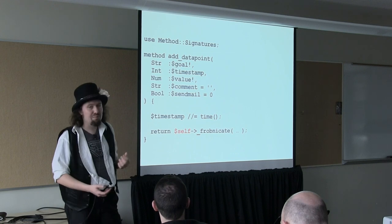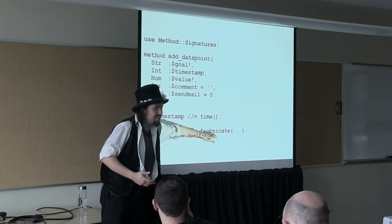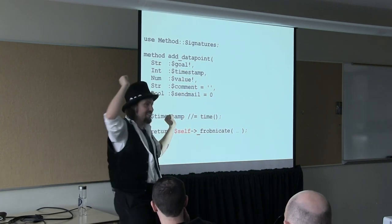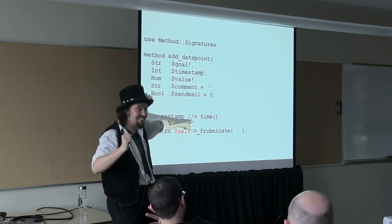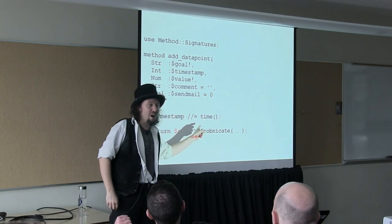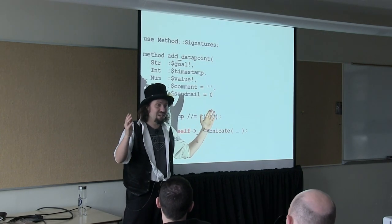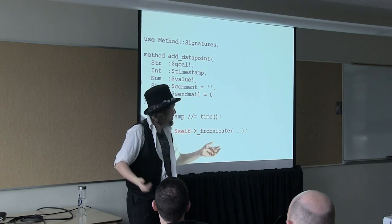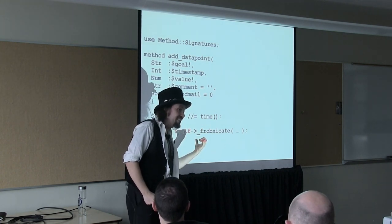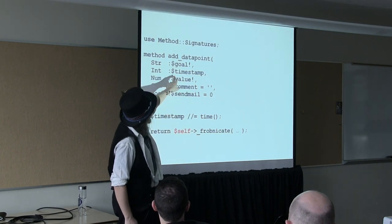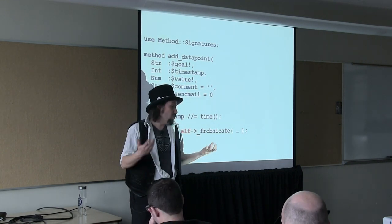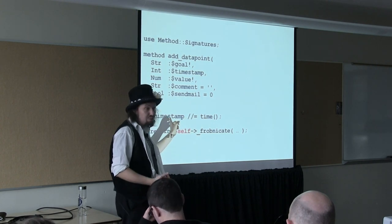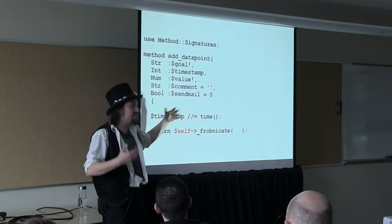Once I've set up the method signature, I can set my timestamp if it's not already set, and go off and do whatever the work is — talk to the API. You had a question about the //= operator. That's defined-OR. A regular OR with double vertical bar gives you the left-hand side if it's true, otherwise the right-hand side. The defined-OR gives you the left-hand side if it's defined. So if my timestamp comes in as zero — midnight 1970 — I don't want to replace that with now. This makes sure that only happens if the timestamp was originally undefined. This is Perl 5.10 and above and it's absolutely wonderful.